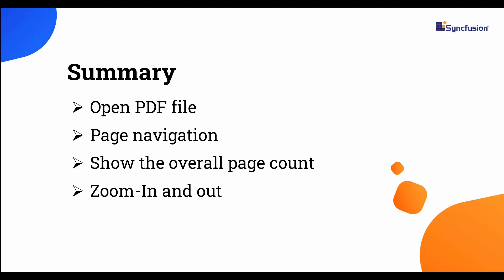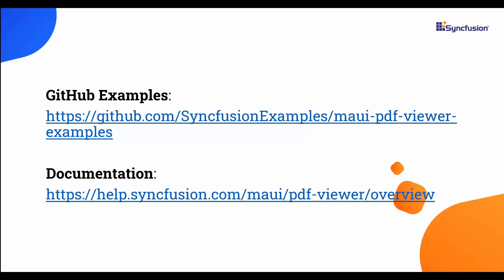In this video, I have shown you how to create a custom toolbar in the Syncfusion .NET MAUI PDF Viewer component for opening a PDF file from the local machine, navigation, showing the overall page count, and zooming. If you want to see the working example, you can download it from the GitHub link in the description below. I will also include a link in the description where you can check if you qualify for our community license, giving you a free license key for our entire .NET MAUI suite. If you found this video useful, don't forget to click the like button and subscribe to our channel. Thanks for watching and we hope to catch you in the next video.